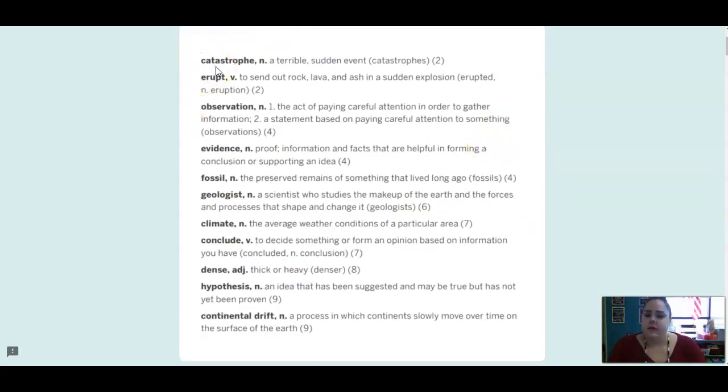A catastrophe is a terrible sudden event. Erupt, that's a verb, and it means to send out rock, lava, and ash in an explosion. So like volcanoes erupt. An observation is a noun, and that is when you're paying attention to something closely and gathering information like we do in science experiments. Evidence is proof, that's a noun.